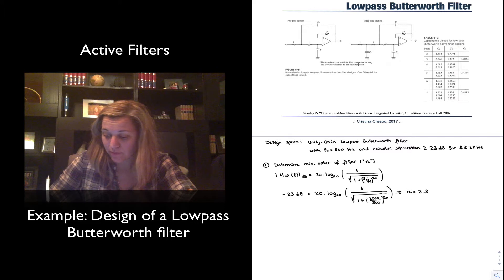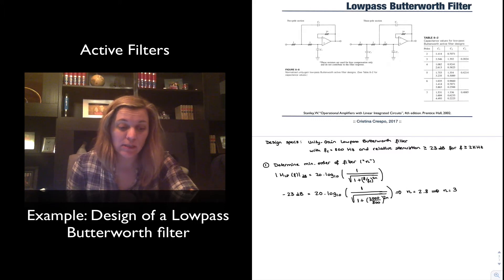Which if we solve for n gives us n equal to 2.8. So basically what that means is that we need an order of at least 3, which is the next available integer.